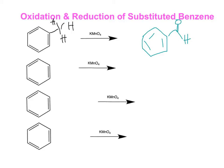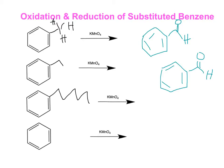The first example is done with a methyl group. If there's an ethyl group attached to the aromatic ring, the same thing actually happens where you end up with no more than the benzoic acid group. And no matter what you have coming off of here, as long as there are some hydrogens attached at the benzylic position, you will get an aromatic ring with the benzoic acid.